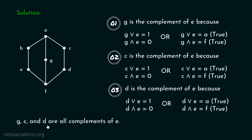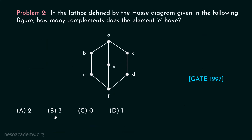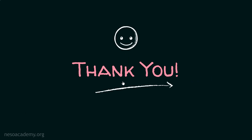It is clear that G, C, and D are all complements of E. Apart from these, no other element is a complement of E. Hence option B is the correct option — there are a total of three complements of E: G, C, and D. Thank you for watching this presentation.